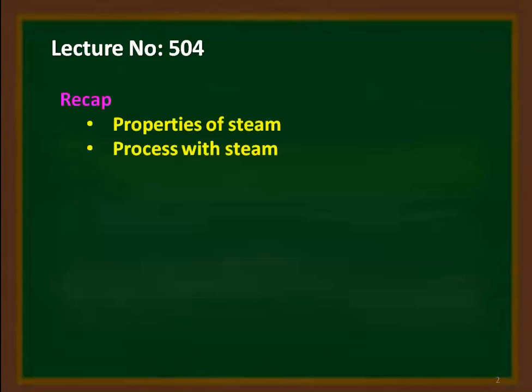We recap from the previous lectures. We studied about the properties of steam and discussed various thermodynamic processes with steam: constant volume process, constant pressure process, isothermal process, adiabatic process, and the polytropic process. We calculated the work done and heat transfer for all these thermodynamic processes, and we introduced the steam table, use of the steam table, and the Mollier diagram.